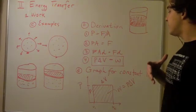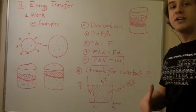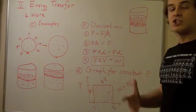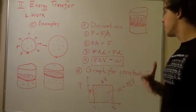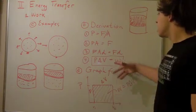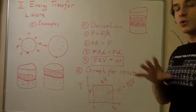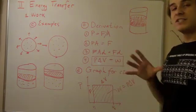If we want to find the work when pressure isn't constant, we could still do it, but then we have to use the integral over some area. We could no longer use this equation because this equation assumes that pressure is constant throughout the experiment. But if it's not constant, we have to use calculus and integrate it.